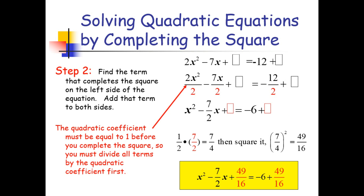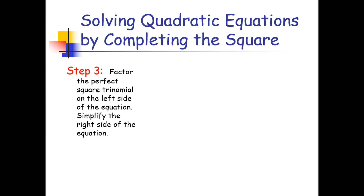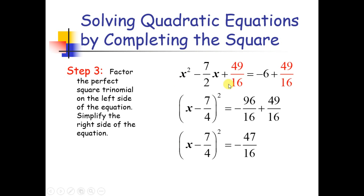For step 3, we factor the perfect square trinomial on the left side and simplify the right side. The factor for x squared minus 7 over 2 times x plus 49 over 16 is the quantity (x minus 7 over 4) squared. On the right side, we use LCD to simplify: negative 6 becomes negative 96 over 16, plus 49 over 16, giving us negative 47 over 16.